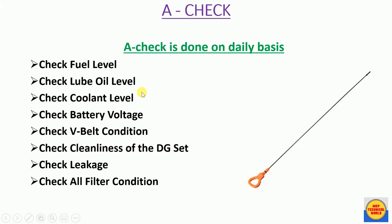Next, check the lube oil level. Lube oil keeps the engine frictionless and reduces the grating effect inside the diesel engine. A dipstick is used to measure the lube oil level — it is marked H (high) and L (low). If the lube oil is near to L, add lube oil.